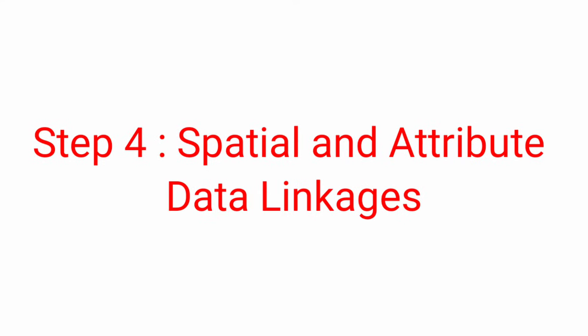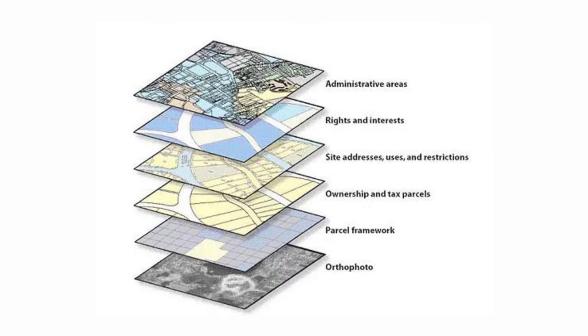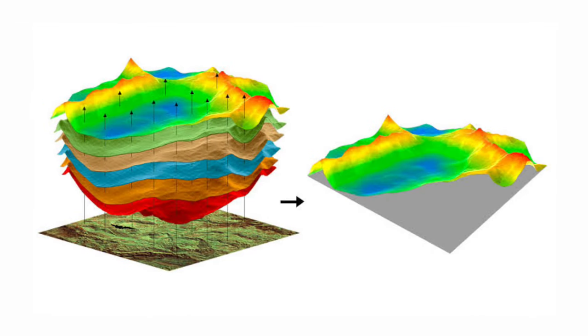After data verification and editing, we move to spatial and attribute data linkages, which is the process of linking spatial data to non-spatial data. Lastly, the most important part is spatial analysis. The strength of GIS lies in its analytical capabilities. The analysis functions use spatial and non-spatial attributes to answer questions about the real world. Geographic analysis facilitates the study of real-world processes by developing and applying models, and GIS may effectively be used to predict future trends over space and time related to a variety of phenomena.